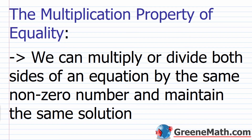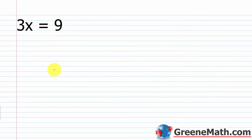Now let's talk about the multiplication property of equality. We can multiply or divide both sides of an equation by the same non-zero number — and that's important, zero is not involved here — and maintain the same solution. If you use 0 to multiply, remember, multiplying by 0 makes everything 0, so 0 will not work for our multiplication property of equality. It has to be the same non-zero number.